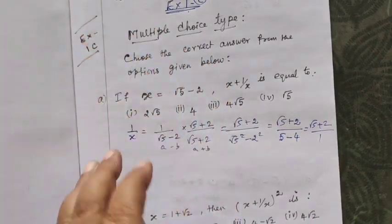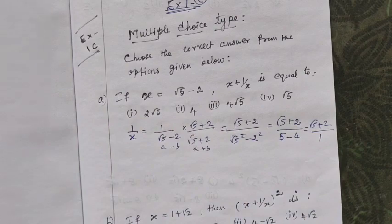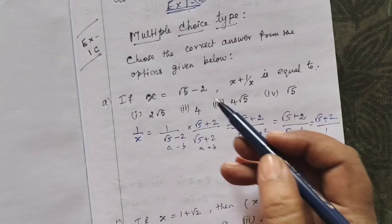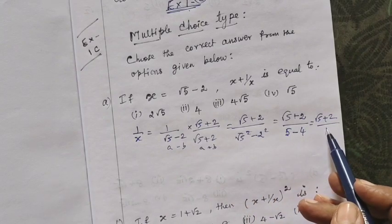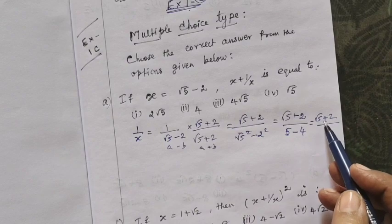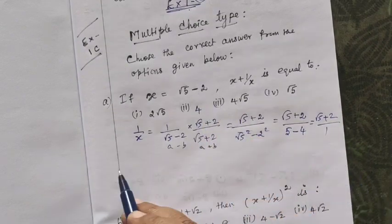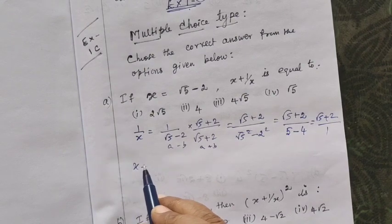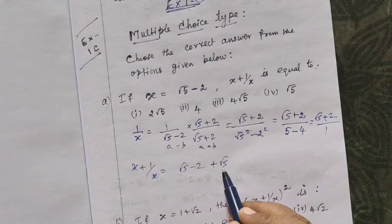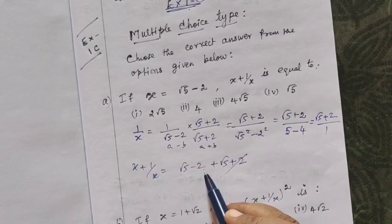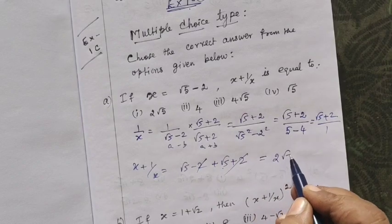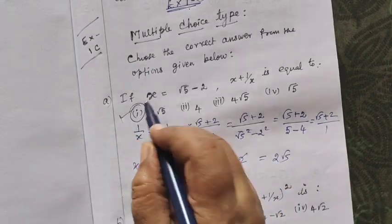Since it is a one-step question, you can directly write the conjugate. If one number is given as root 5 minus 2, then its reciprocal — that is, the conjugate — is root 5 plus 2, just changing the sign. Now add both: x plus 1 by x equals root 5 minus 2 plus root 5 plus 2. The 2s cancel, giving root 5 plus root 5 equals 2 root 5. So this option is correct.